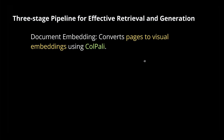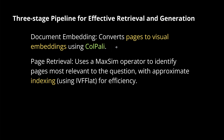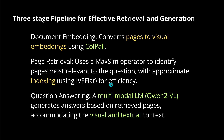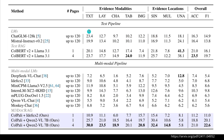The system uses a three-stage pipeline for effective retrieval and generation. First, document embedding converts pages to visual embeddings using ColPali. Then a similarity operator identifies the most relevant pages to the question with appropriate indexing. Finally, the QWen2 Vision Language model generates the answer based on the retrieved pages, accommodating visual and textual context together. The benchmark results show ColPali plus QWen2 Vision Language using only the 7 billion parameter model achieving very good performance.